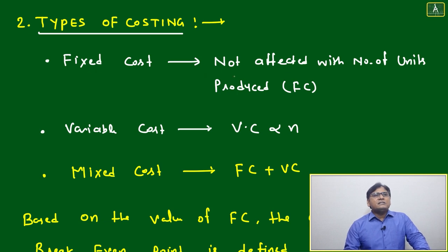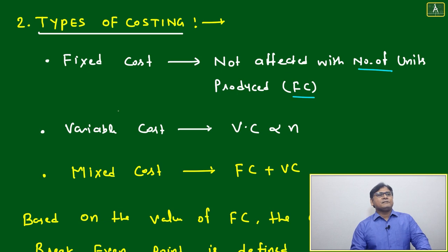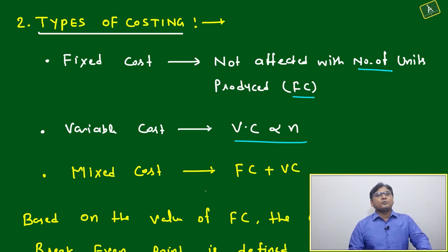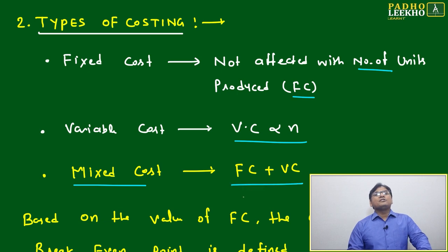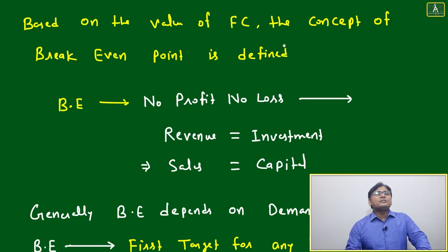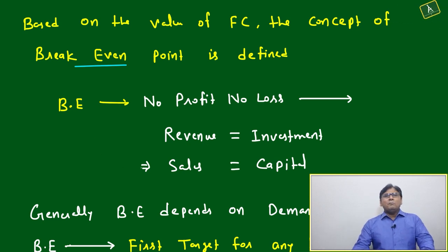Fixed cost (FC) is not affected by the number of units produced. Variable cost is directly proportional to the number of units produced. Mixed cost is generally fixed cost plus variable cost. Based on the value of fixed cost, the concept of break-even is defined.